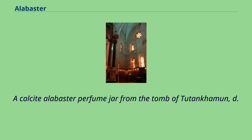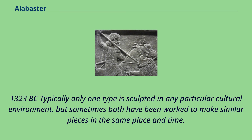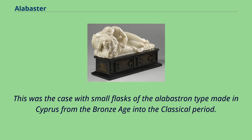A calcite alabaster perfume jar from the tomb of Tutankhamen, 1323 BC. Typically only one type is sculpted in any particular cultural environment, but sometimes both have been worked to make similar pieces in the same place and time. This was the case with small flasks of the alabastron type made in Cyprus from the Bronze Age into the Classical period.